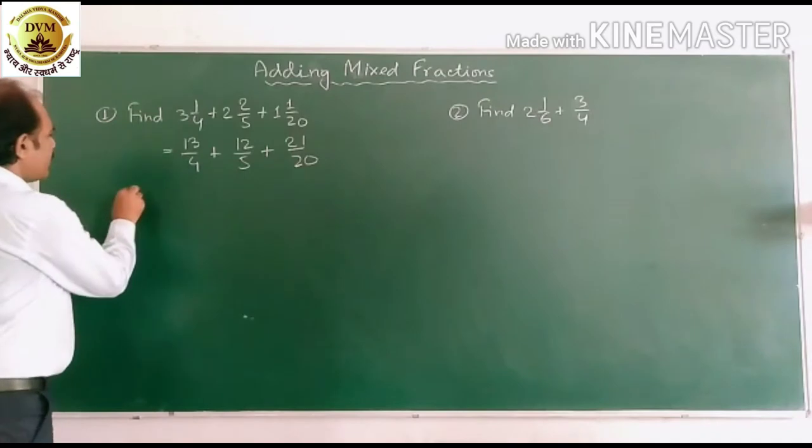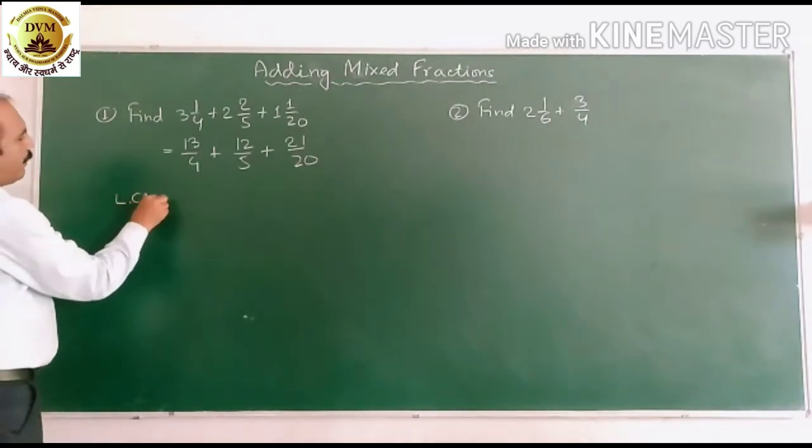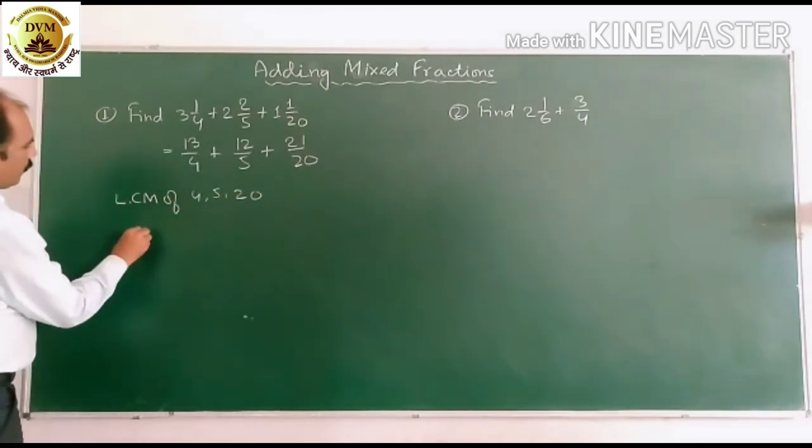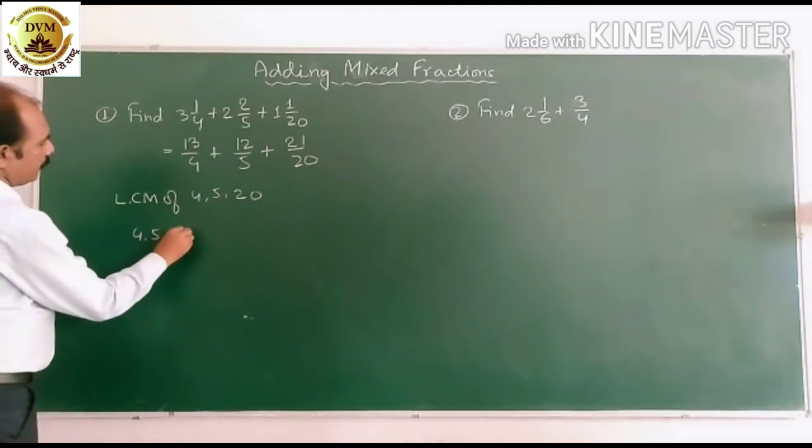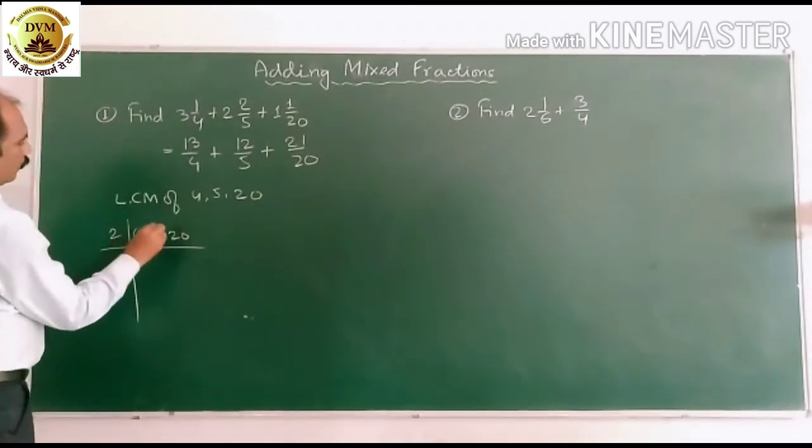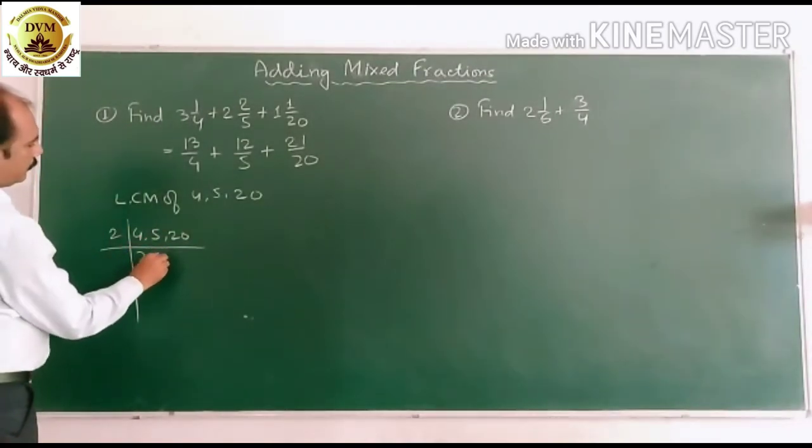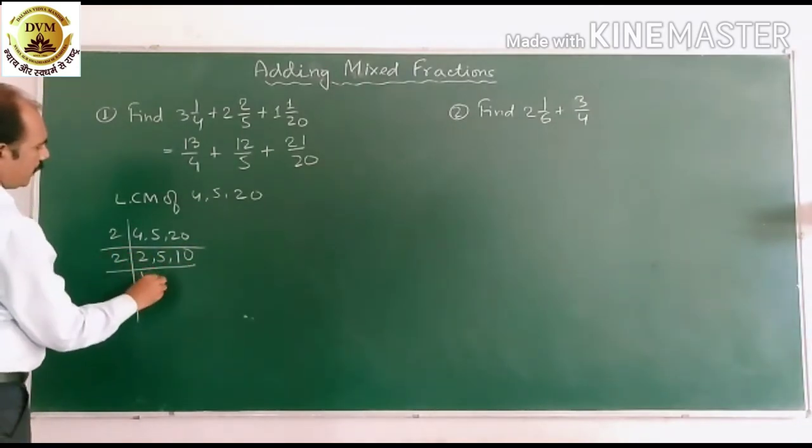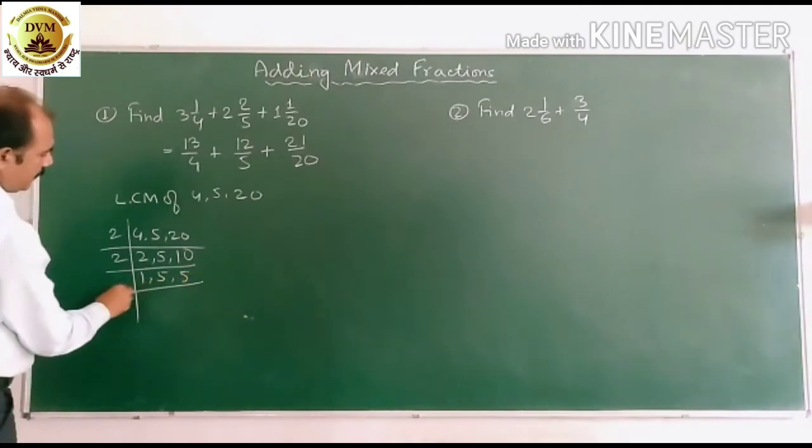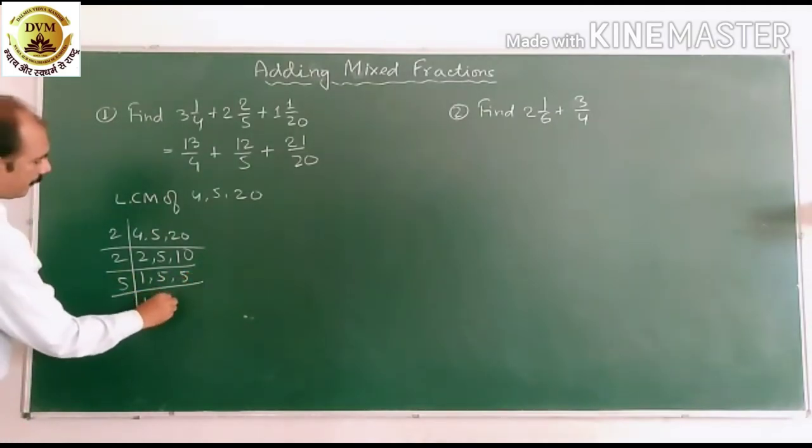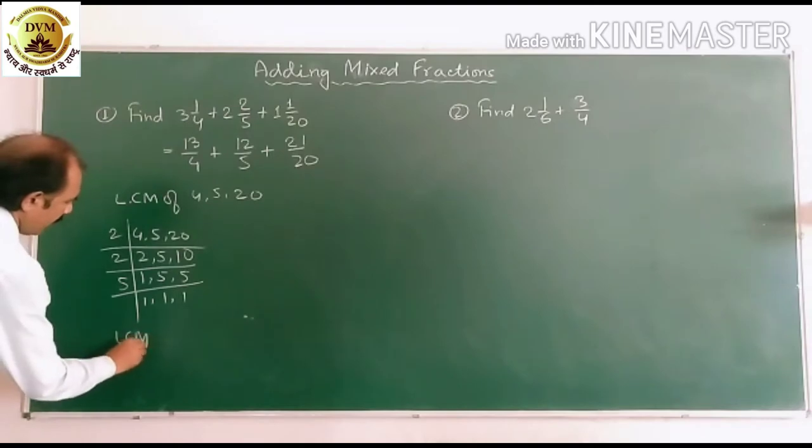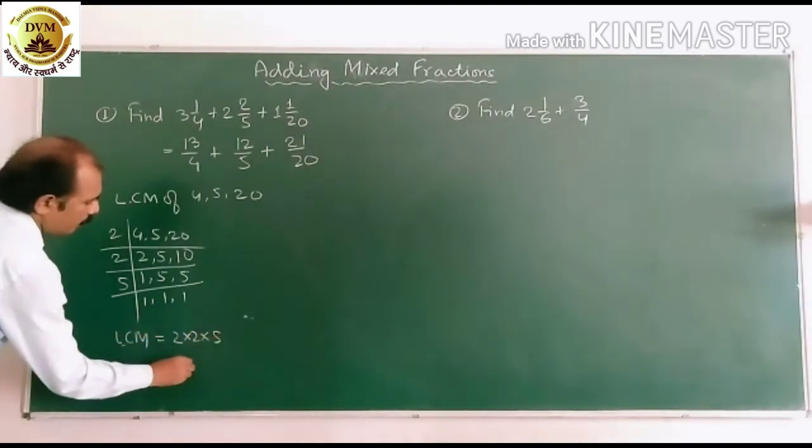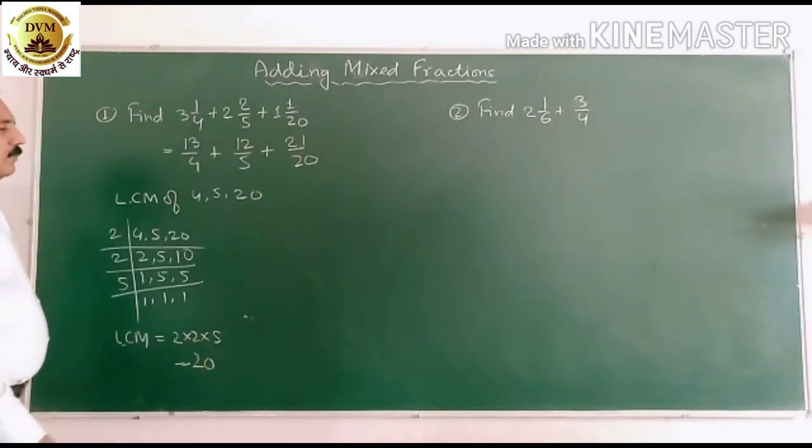So first we find the LCM. LCM of the denominator means 4, 5, 20. 2 divides 4, 2, 10, 20. Again 2 divides 2, 2, 5, 10. Again 5. So LCM is equal to 2 times 2 times 5. LCM is equal to 20. Here LCM is 20.